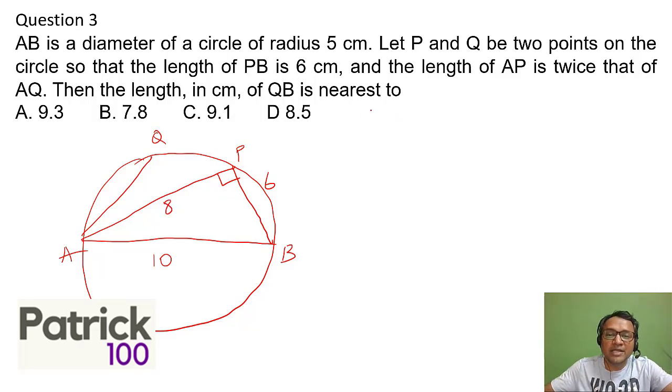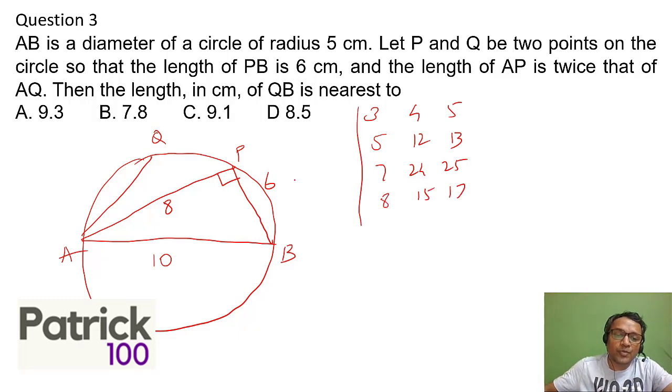So when you have a diameter, diameter subtends the right angle at any point on the circle, so I know this is the right angle. And moment you see 6 and 10 you can make out that this is 8. You should know triplets, the basic triplets: 3, 4, 5; 5, 12, 13; 7, 24, 25; and 8, 15, 17. These are triplets you should know. So moment you see 6 and 10 you can make out third side is 8. If this is 8, that means AQ will be 4, since AQ is half of AP.